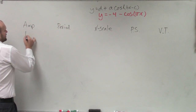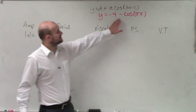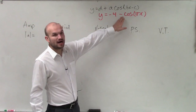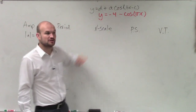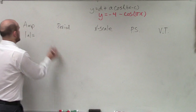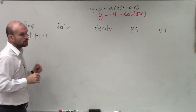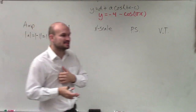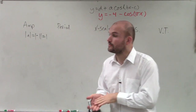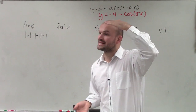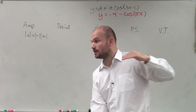So our amplitude is the absolute value of a. We can see here our a is what's being multiplied by our cosine function, which is negative 1. So the absolute value of negative 1 is just equal to 1. That's going to tell us the half distance between our maximum and our minimum, so our graph is only going to go as high as 1 and as low as 1.